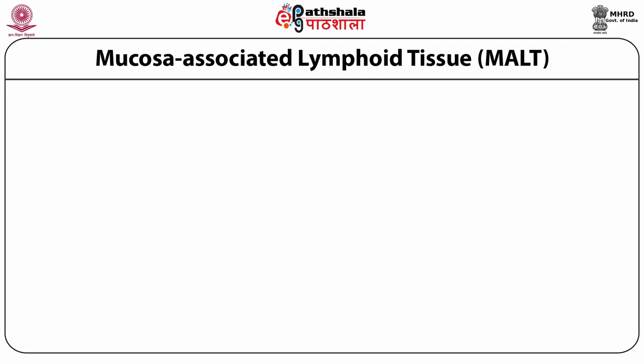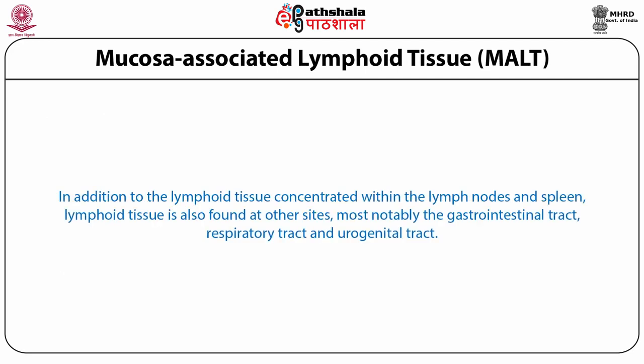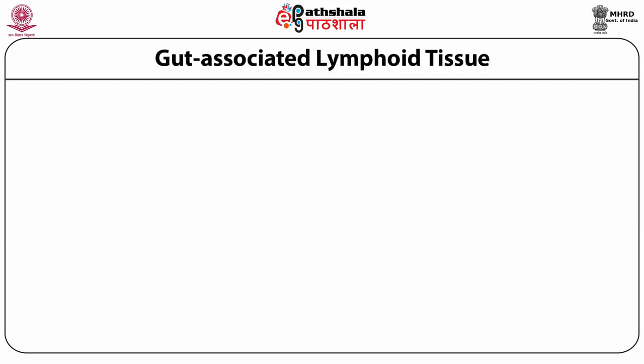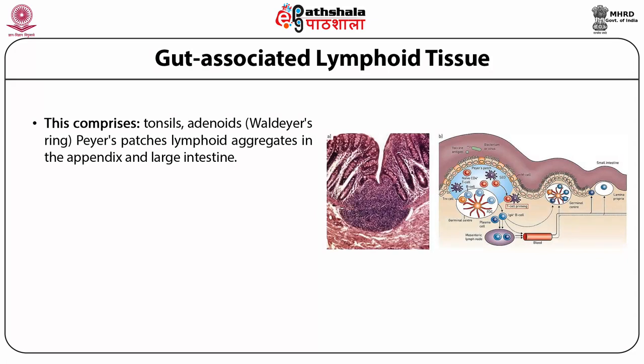In addition to lymph nodes and spleen, lymphocytes are also found at other sites, most notably the gastrointestinal tract, respiratory tract, and urogenital tract. Gut-associated lymphoid tissue (GALT) comprises tonsils, adenoids, Peyer's patches, lymphoid aggregates in the appendix and large intestine, lymphoid tissue accumulating with age in the stomach, small lymphoid aggregates in the esophagus, and diffusely distributed lymphoid cells and plasma cells in the lamina propria of the gut. Large aggregates of GALT have distinct B cell follicles and T cell areas, and antigen-presenting accessory cells are also present.